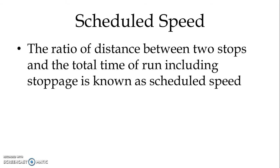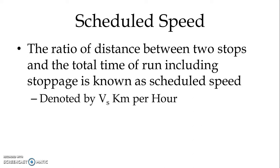Similarly, we have scheduled speed. The ratio of distance between two stops and the total time of run including stoppage is known as the scheduled speed. The difference between average speed and scheduled speed is that scheduled speed considers the total time, adding stoppage time as well. It is denoted by V suffix S and measured in kilometers per hour.